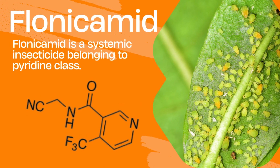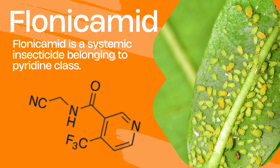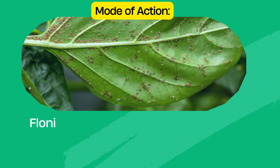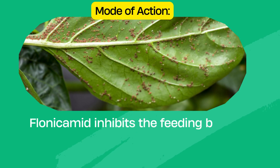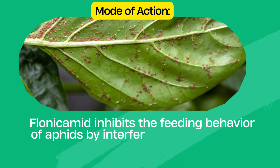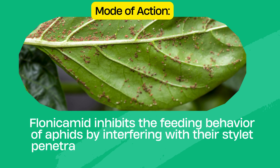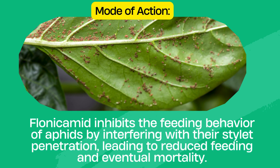Flonicamid is a systemic insecticide belonging to the pyridine class. Its mode of action involves inhibiting the feeding behavior of aphids by interfering with their stylet penetration, leading to reduced feeding and eventual mortality.